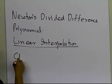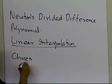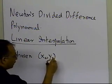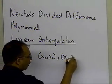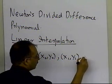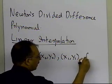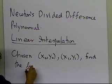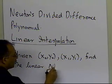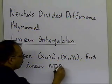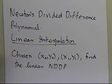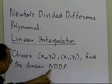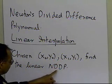The way we're going to present the problems is: given x0, y0, x1, y1, find the linear Newton's divided difference polynomial. We're going to use an abbreviation here — NDDP.